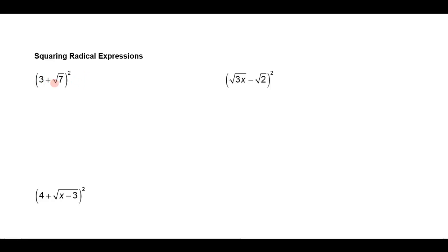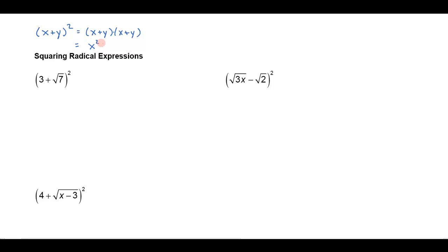When I have (3 + √7) squared, you should think that that's similar to squaring any binomial (x + y) squared, which would be (x + y) times (x + y). I just need to turn that into a FOIL problem.